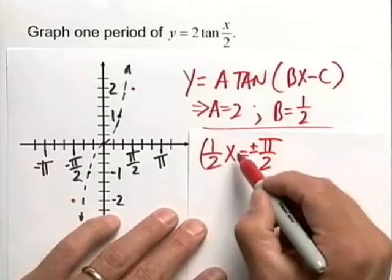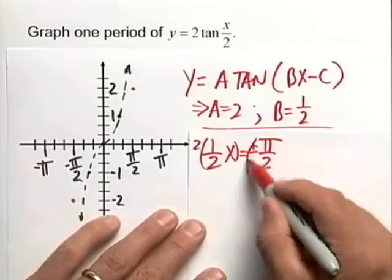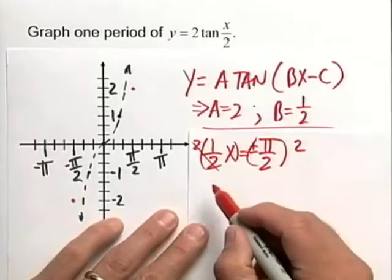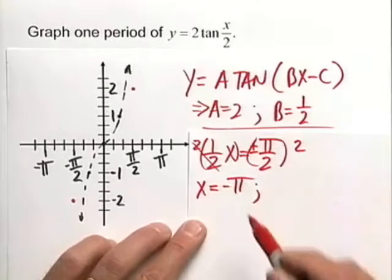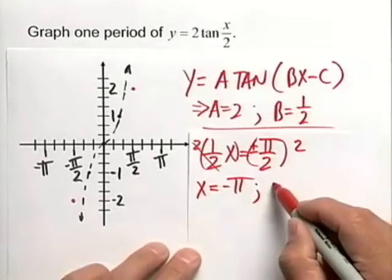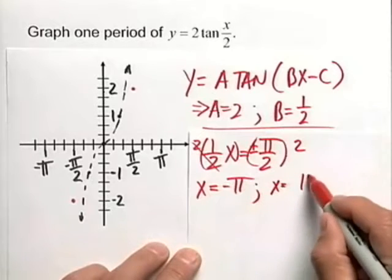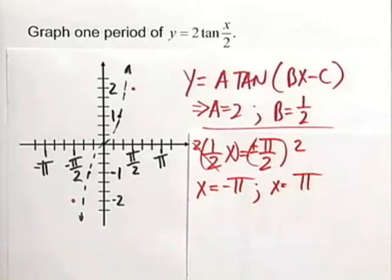To find those vertical asymptotes, we're going to solve both sides for x entirely. Multiplying both sides, we obtain the equation x equals negative pi for one vertical asymptote and x equaling positive pi for the other vertical asymptote.